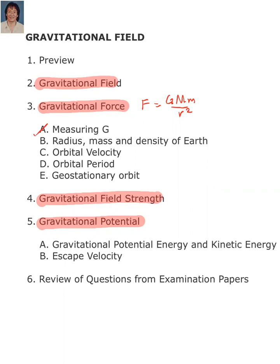Then we will move on to discuss the method to measure the radius, mass, and density of Earth. In most situations, the gravitational force provides the centripetal force necessary for an object to move in a circular path. Therefore, we can equate gravitational force to centripetal force to calculate orbital velocity and hence orbital period. We will use these ideas to determine a very special type of orbit known as geostationary orbit.